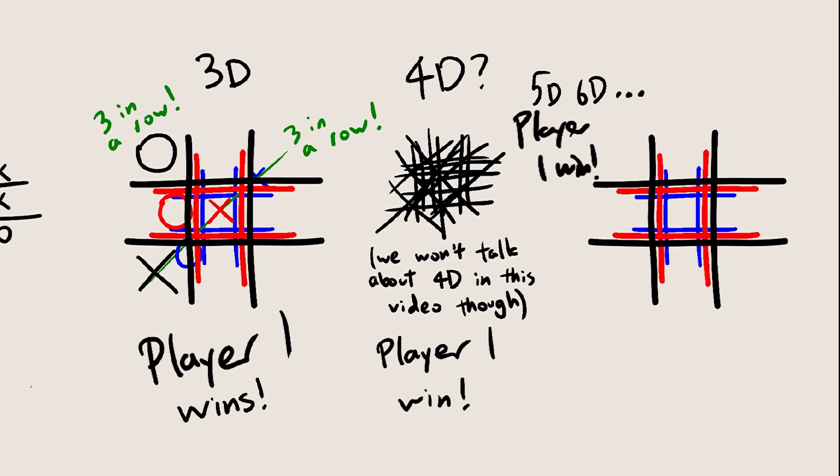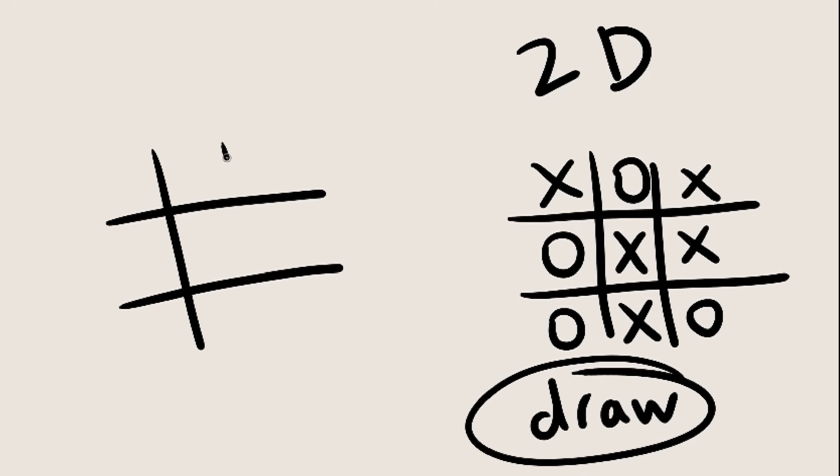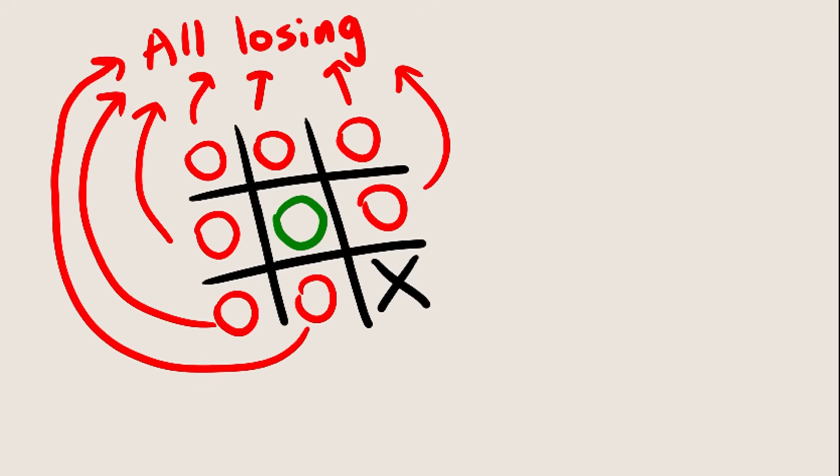To understand why, we need to start with normal 2D tic-tac-toe. Even though this is a draw, that's only if both players play perfectly. So let's look at what moves you should make in order to maximize your chances of winning. First move, you take the corner, not the center. This is because taking the corner leaves the opponent with only one good option, which is to take the center. If they take anything else, they will end up losing if you play correctly.